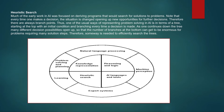So there are always many branch points. One of the most common ways of representing problem solving in AI is in terms of a tree, starting at the top with the initial condition and then branching downwards every time a decision is made. As one continues down the tree, many decision possibilities open up, and the number of branches at the bottom can get to an enormous number of problems requiring solution steps.